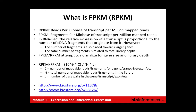The total number of fragments is also related to total library depth. If I have two samples and sequence one with one lane of Illumina and the other with two lanes, I'll get twice as many total fragments from the two-lane sample. You wouldn't want to compare raw counts without correcting for that difference in library depth. Even if you use one lane for each, there will be differences in the efficiency of cluster formation resulting in more fragments for one sample than the other. So you always want to correct for total library size.